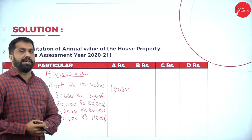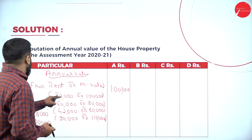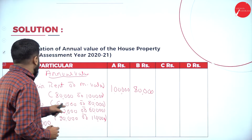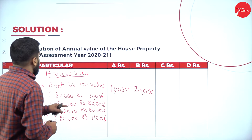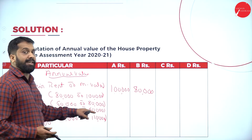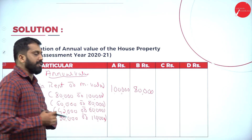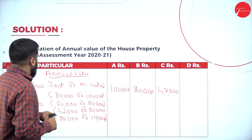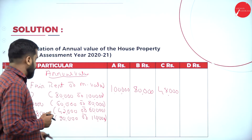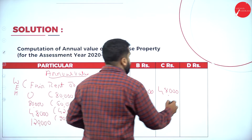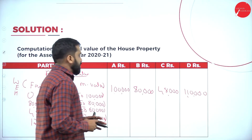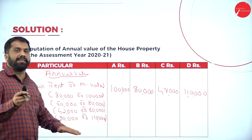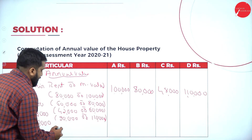60,000 compared with 48,000 — 60,000 is higher but we take the lower with standard rent, so 48,000. 1 lakh 10,000 compared with standard rent of 1 lakh 20,000 — 1 lakh 10,000 is lower, so we take 1 lakh 10,000. The concept is simple: out of the two values take the higher, then compare with standard rent and take the lower.